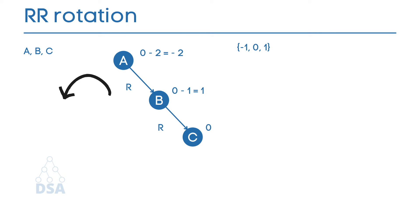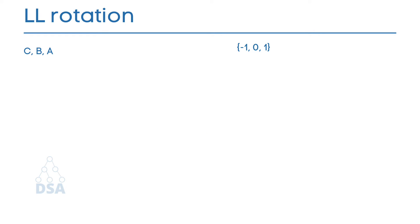We just saw RR rotation, where all elements were inserted in the right subtree. Now let's look at LL rotation. Suppose we insert elements C, B, and A. C is inserted as the root. B is less than C so it is inserted as the left child. A is less than B so it also goes to the left subtree. Since all elements are inserted in the left subtree, this is called LL rotation.